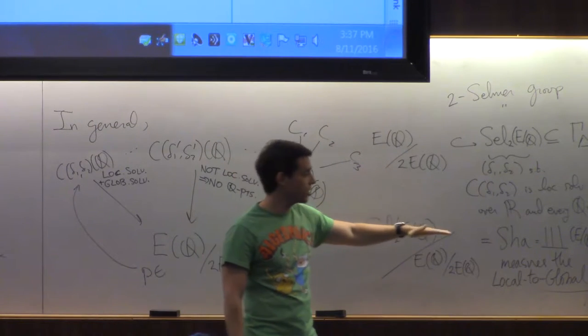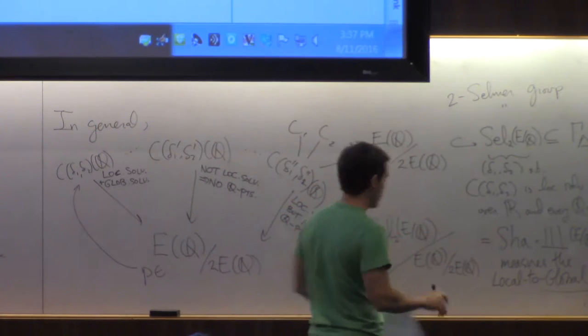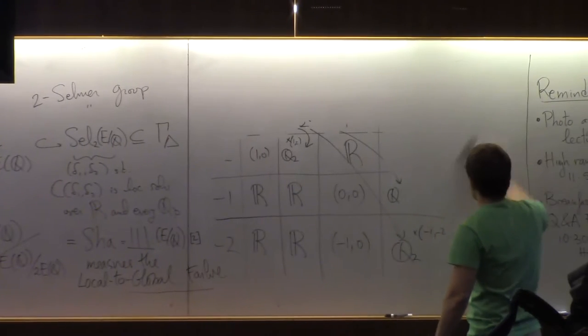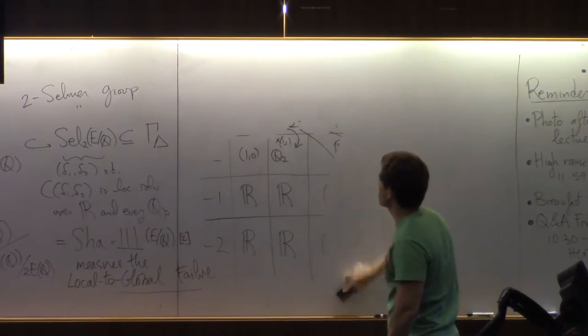We do not know that. The conjecture is that SHA is always finite and it is proved in some cases that it's finite. But we do not know in general that all elliptic curves have finite SHA.